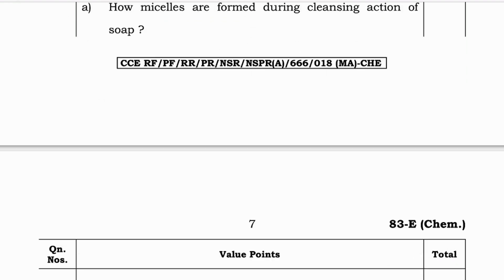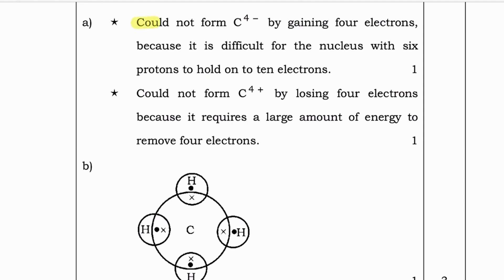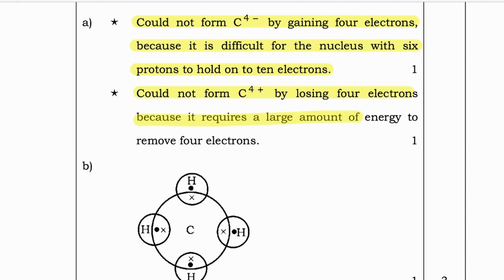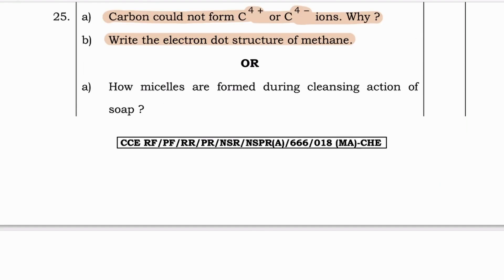Next: Carbon could not form C⁴⁺ or C⁴⁻ ions — why? Write the electron dot structure of methane. Carbon cannot form C⁴⁻ by gaining four electrons because it is difficult for the nucleus with six protons to hold onto 10 electrons. It cannot form C⁴⁺ by losing four electrons because it requires a large amount of energy to remove four electrons. This is the electron dot structure of CH4 (methane).